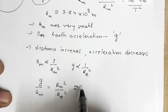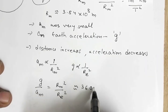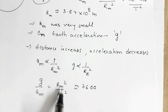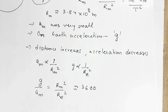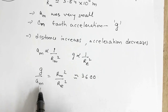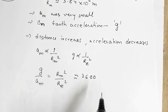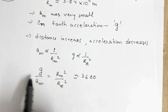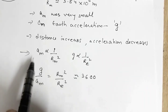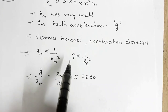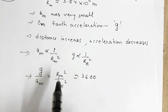Substituting the values of rm and re, the ratio rm² / re² comes out to be approximately 3600. This is in agreement with the known values of am and g — if you substitute those values, their ratio is also 3600. Since this result matches, the assumption is confirmed: acceleration is inversely proportional to the square of the distance.